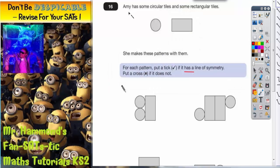Question 16 is all about symmetry. It says Amy has some circular tiles and some rectangular tiles. She makes these patterns with them.